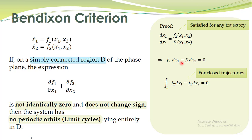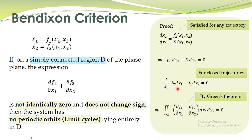Limit cycles are also described by this equation because limit cycles are also trajectories. If you have an analytical function and you integrate it along a closed trajectory, that line integral always equals zero. This line integral can be converted into a surface integral by Green's theorem — a result you have studied in your course on differential equations. If you do not remember, it is in the book by Kreyszig.